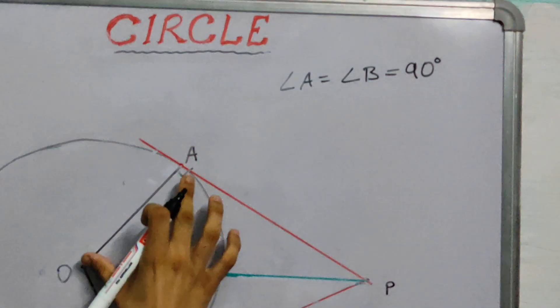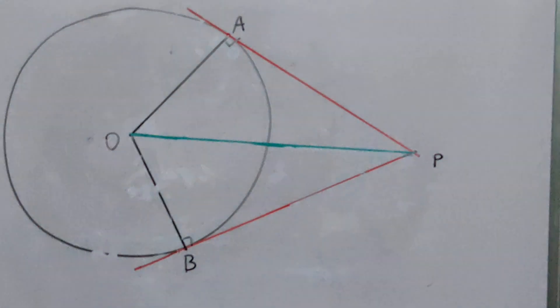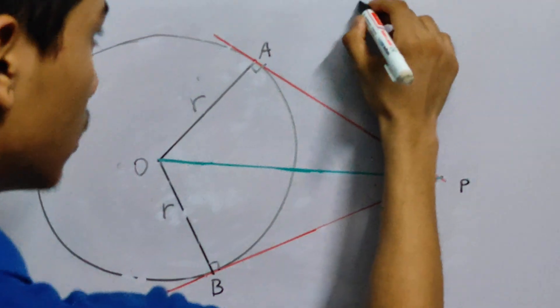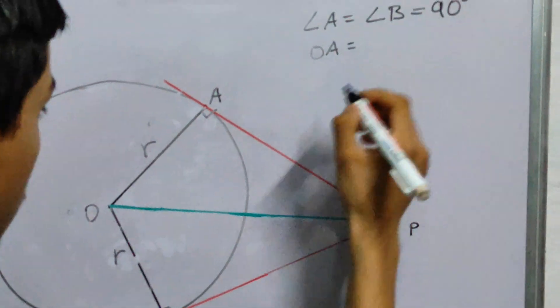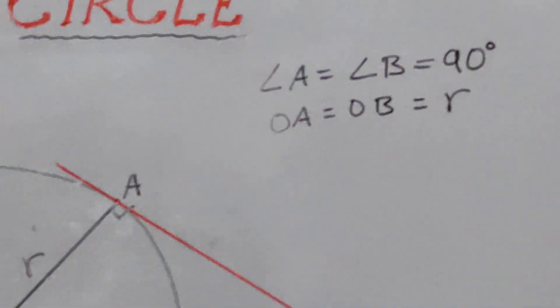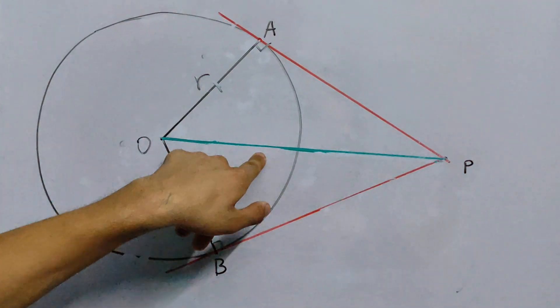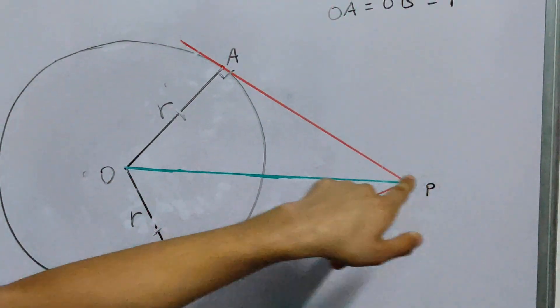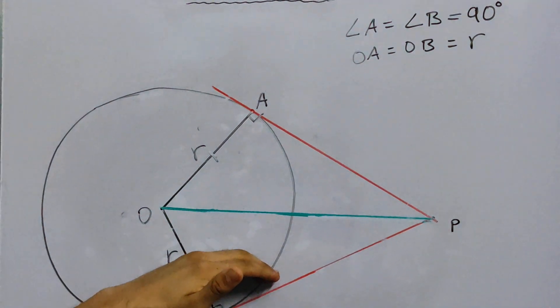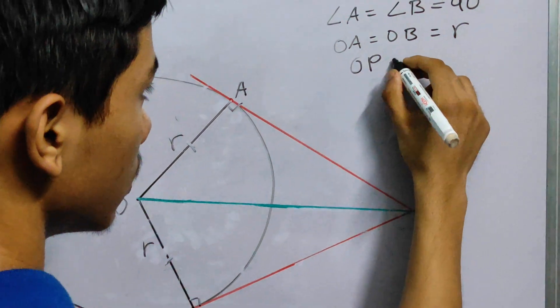Notice, these two lines, OA and OB, are also equal. They are also equal. They are the radii of the same circle. So OA is equal to OB is equal to R. Now, this line, if you notice this line, OP, this is common in both of these triangles. So it is equal to itself, right? So OP is common.